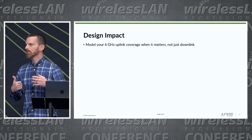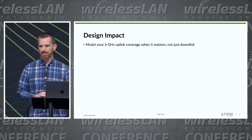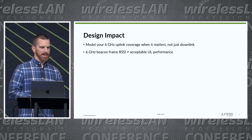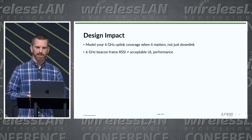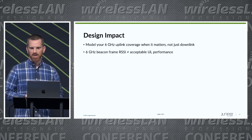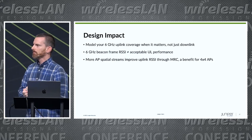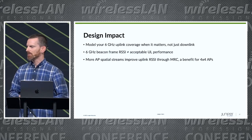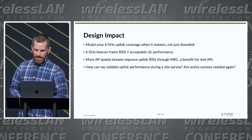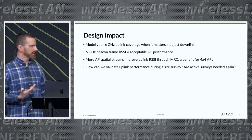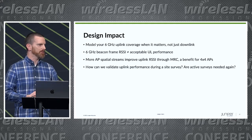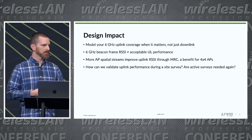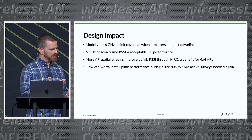A couple of design tips for 6 GHz: if you have mission-critical 6 GHz devices, it's useful to model the uplink coverage, not just the downlink. Another way to reframe that is that measuring the 6 GHz beacon RSSI doesn't tell us everything we really want to know and validate about performance on that network. Something that helps is more spatial streams on the AP, which increases receive sensitivity and can pull some of those lower-power signals out of the air a little bit better. A normal validation survey doesn't tell us anything about uplink, so for mission-critical 6 GHz networks, take some of those important clients out to areas where the signal might be marginal and see how they're doing on the uplink.